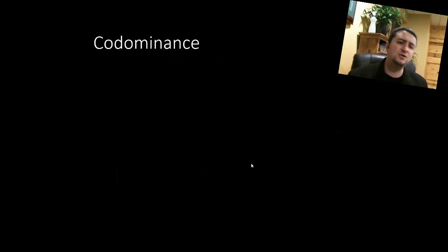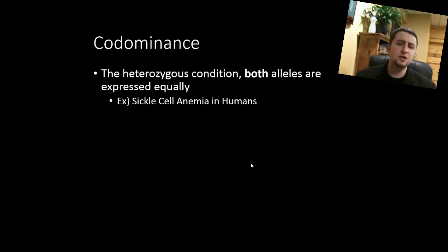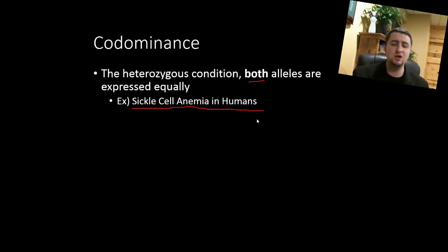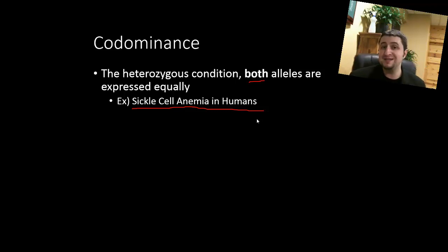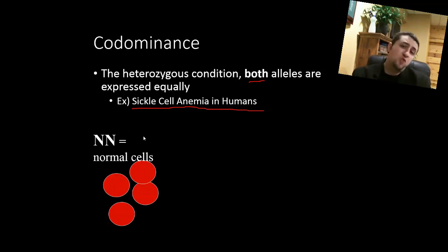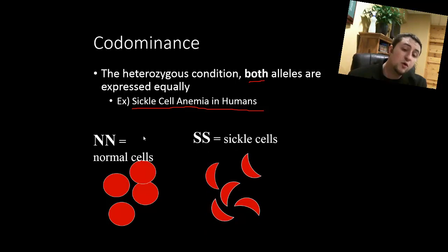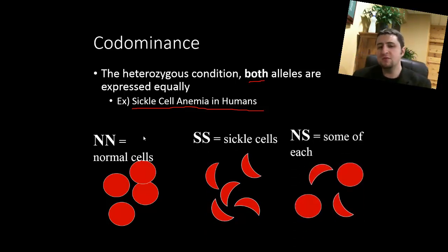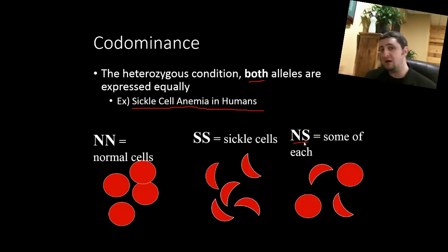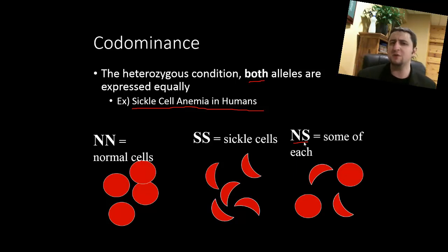Another phenomenon in biology is codominance, where both alleles show up at the same time. A really good example is sickle cell anemia in humans. Sickle cell is a disease in human blood where people who have it won't survive into adulthood. We have normal blood cells and sickle cell blood cells — the sickle cell ones make people really sick. With codominance, some blood cells are sickle cell and some are normal; it's as if both show up. To find out more about codominance and Punnett squares, please follow the link here.